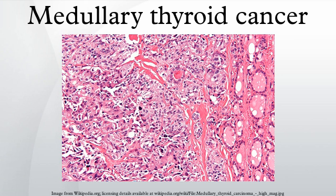Vandetanib, trade name Caprelsa, was the first drug to be approved by the U.S. Food and Drug Administration for treatment of late-stage medullary thyroid cancer in adult patients who are ineligible for surgery. Cabozantinib, trade name Cometriq, was granted marketing approval by the U.S. FDA for this indication. Cabozantinib, which is a potent inhibitor of RET, MET, and VEGF, was evaluated in a double-blind placebo-controlled trial. It was shown to improve overall survival by five months for the treated cohort versus placebo, which was not statistically significant. However, Cabozantinib was particularly effective in patients with the RET M918T mutation, extending overall survival by roughly two years, doubling survival versus untreated patients.